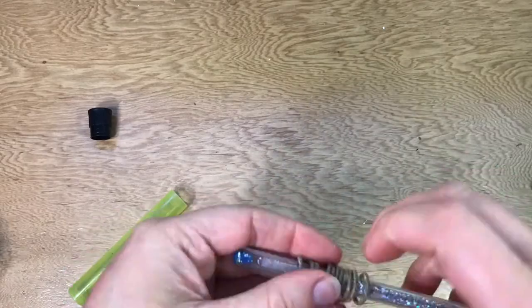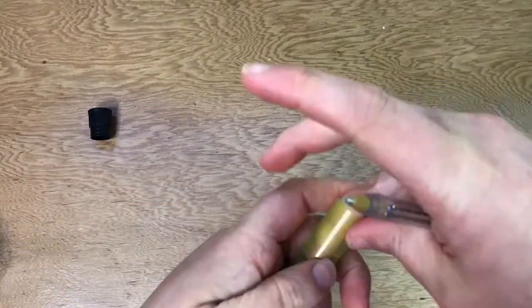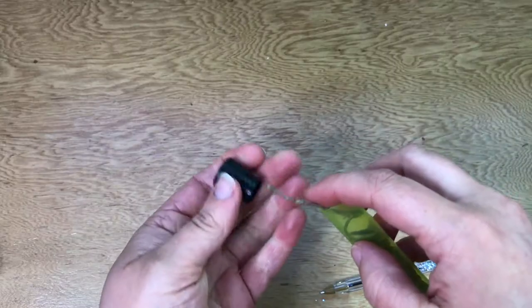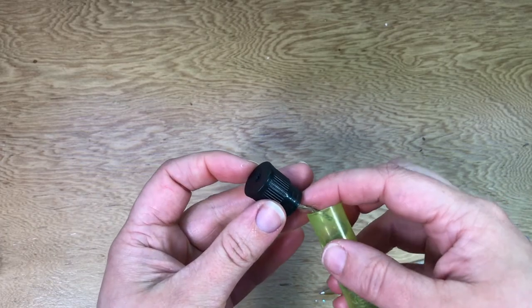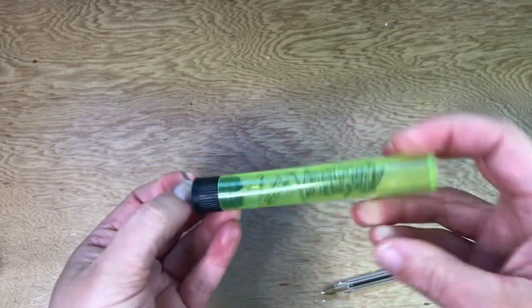Now I'm going to wrap up some hemp wick using my pen and then I'm going to slide my pen inside the hemp wick holder and slide off the hemp wick. Then all that's left to do is thread it through the hole in the lid and you have yourself a hemp wick dispenser.